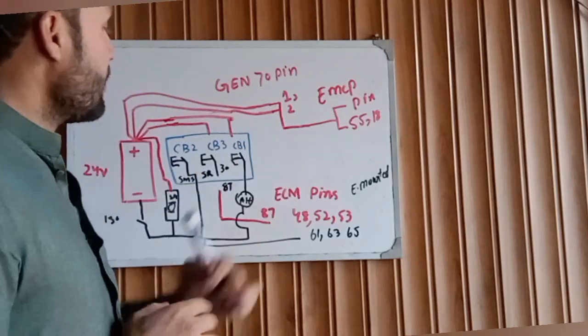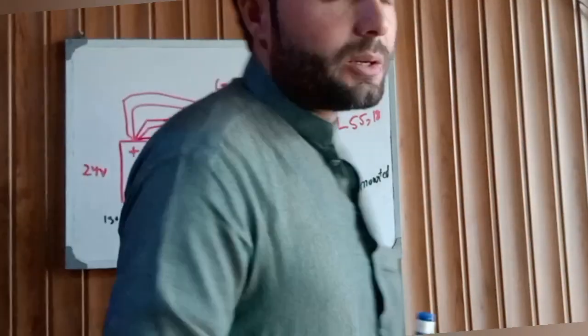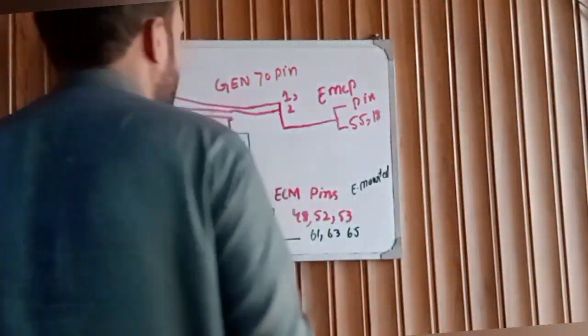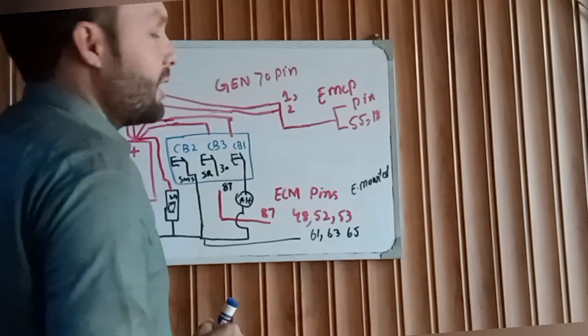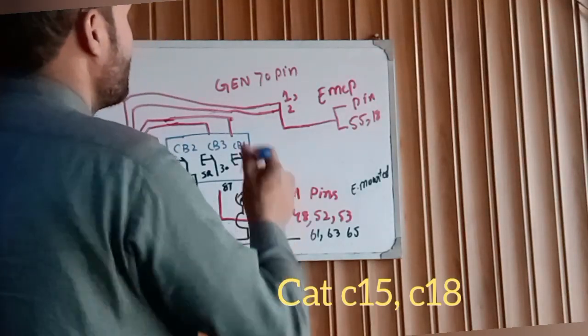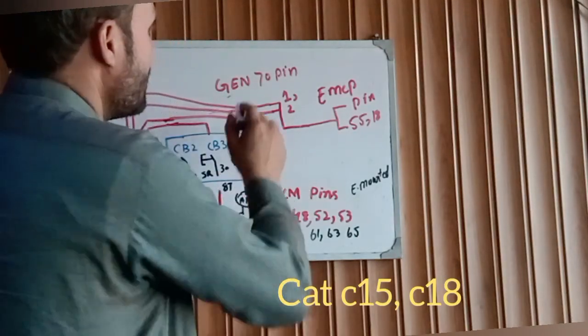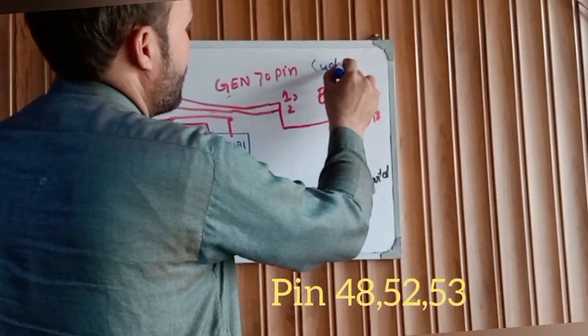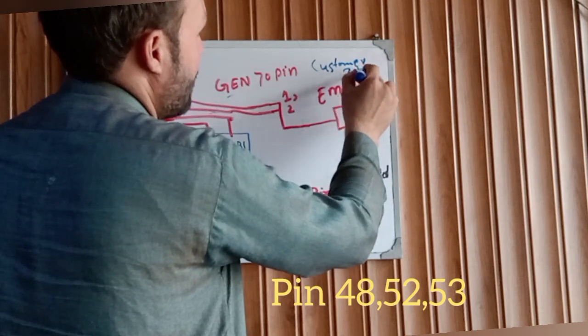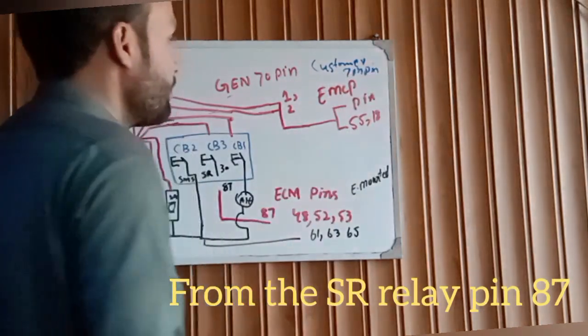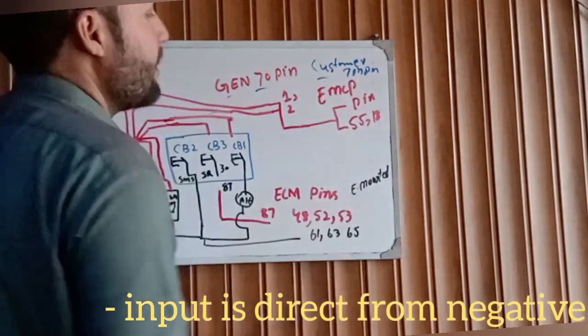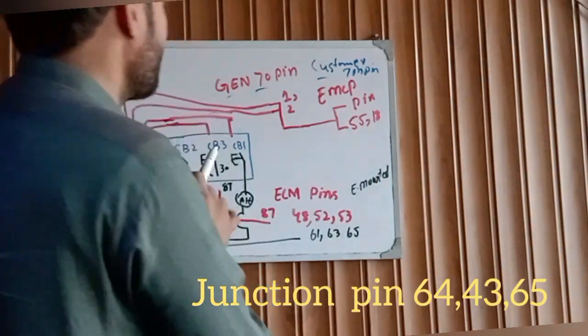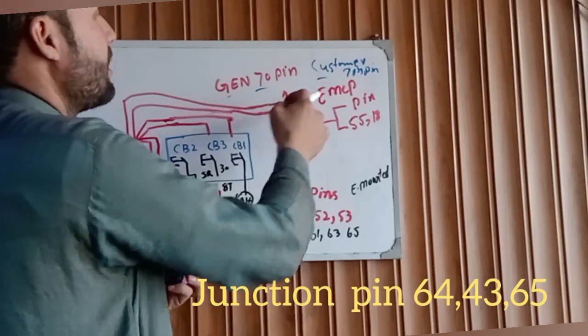How the wiring is connected between these both two connectors. We have two connectors: one is Gen 70 pin connector and one is Customer 70 pin connector. This one is from the generator and one from the EMCP, connected together.